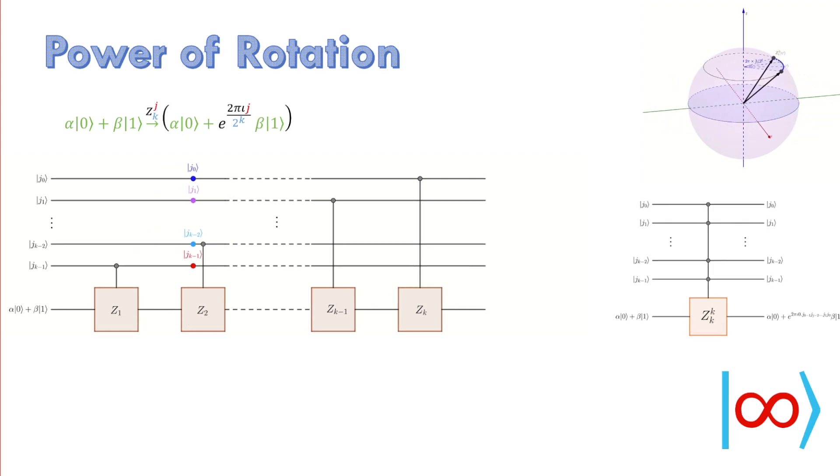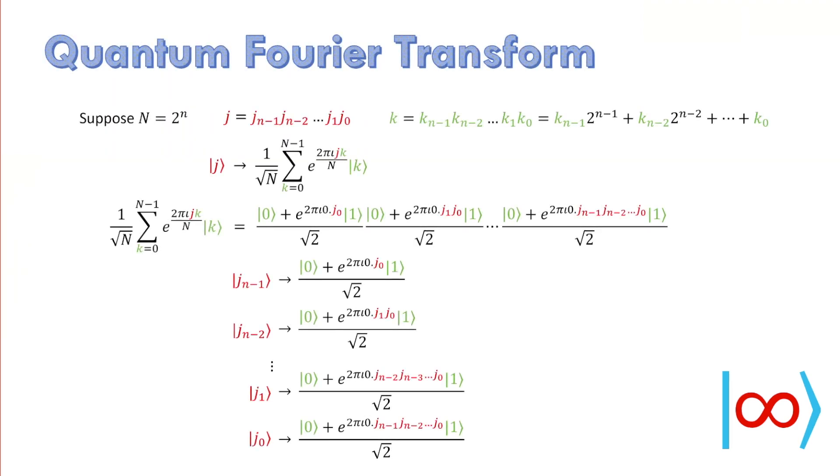We saw that the state after applying quantum Fourier transform is factorizable and we can work as if we are rotating individual qubits.